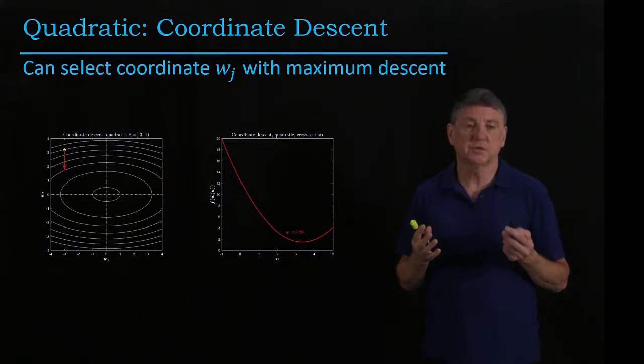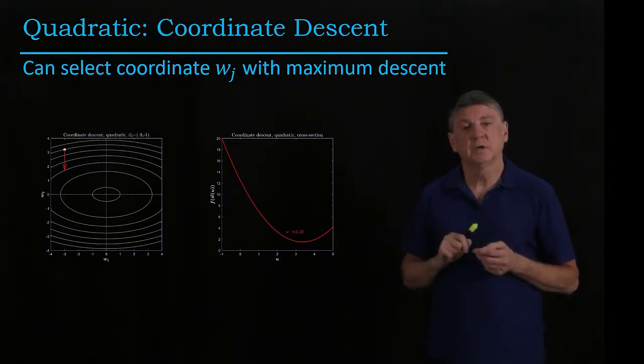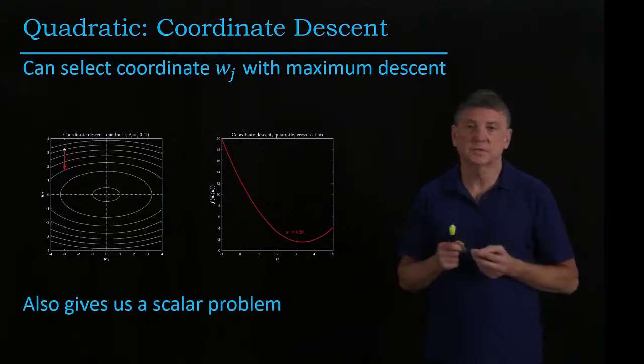And if we did that, because this is a quadratic function, we also see that this has a quadratic cross-section. So this is also giving us a scalar problem.